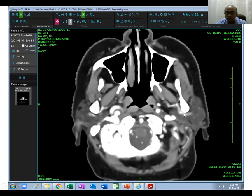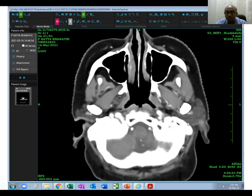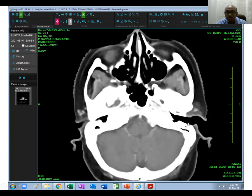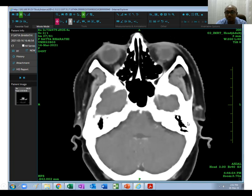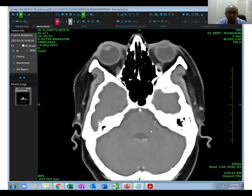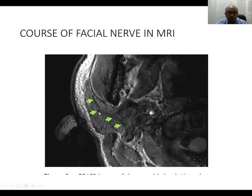We cannot see the facial nerve here properly on CT. For that reason, we have to see the MRI. Without MRI, seeing the facial nerve is very difficult. You can see only the course of the facial nerve — a very superficial part of the nerve. That is all about the parotid gland anatomy as well as its contents. Thank you very much.